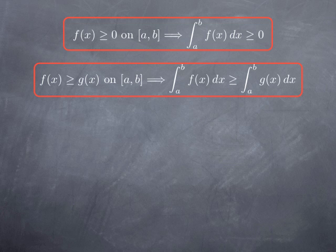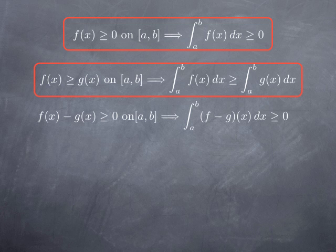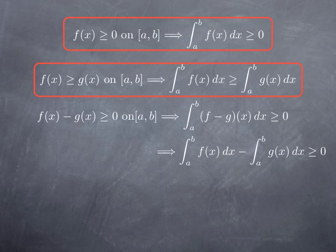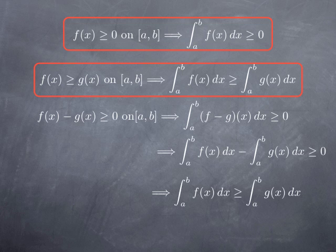This is a direct consequence of the first observation, because if you reinterpret the condition that f is larger or equal to g on [a,b] as the fact that f(x) minus g(x) is greater or equal to 0 on [a,b], then using the first observation, we get that the integral of the difference f minus g is greater or equal to 0. But we know that because the integral of a sum is the sum of the integrals and we can pull out constant multiples, the integral of a difference is the difference of the integrals. In other words, the integral of f over [a,b] minus the integral of g over [a,b] is greater or equal to 0, which means the integral of f over [a,b] is greater or equal to the integral of g.